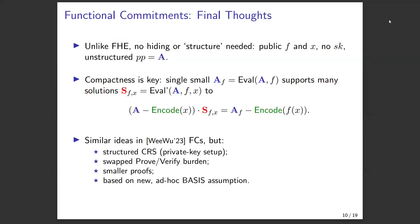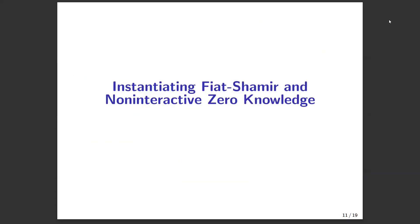I should also mention a concurrent work by Wee and Wu which also gets functional commitments with very different properties — a structured random string with a private key setup, where the prover does little work but the verifier does a lot, with smaller proofs based on a new ad hoc assumption. Still, you can probably write their scheme as arising from the central equation. Let's move on to a second surprising application: instantiating Fiat-Shamir to get non-interactive zero knowledge.